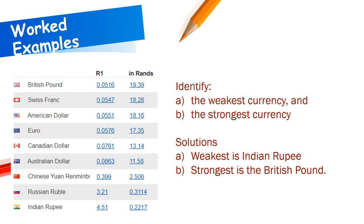For the strongest currency, use the second column — it's the currency that requires the most rand to buy one unit. The British pound requires 19.39 rand, whereas the rest require 18 or less. Therefore, the British pound is the strongest currency in this table.